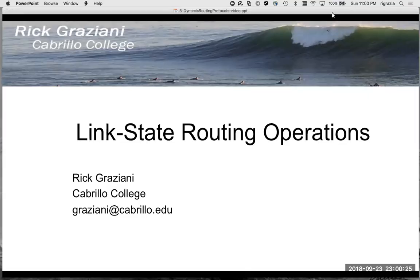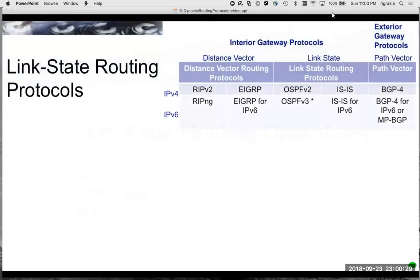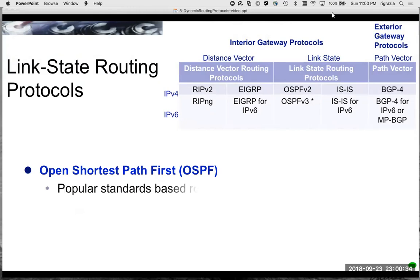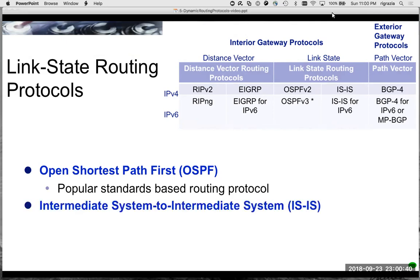In this video we're going to look at link state routing operations. Link state routing protocols include OSPF - Open Shortest Path First - a very popular IETF standards-based protocol, and ISIS - Intermediate System to Intermediate System - popular with service provider networks and in Europe. It's an ISO standard, with some RFCs that support IP.